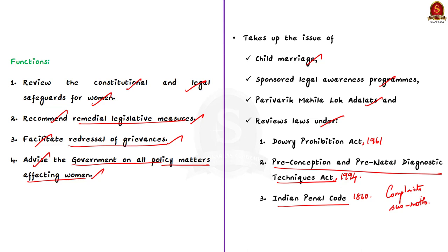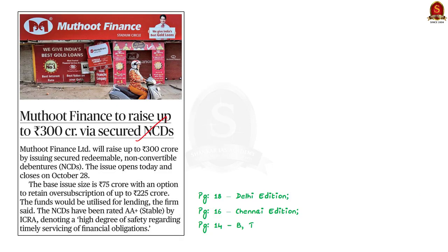This is a very important commission — take note of it and search for more facts about it. This article states that Muthoot Finance Limited will raise up to 300 crore by issuing non-convertible debentures, shortly referred to as NCDs. These NCDs have been rated AA+ by ICRA, which denotes a high degree of safety. In this context, let us discuss debentures and ICRA from a prelims point of view.